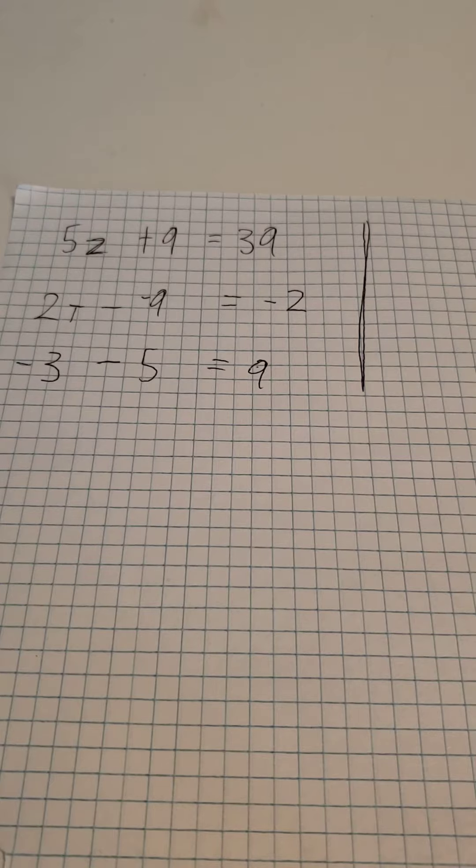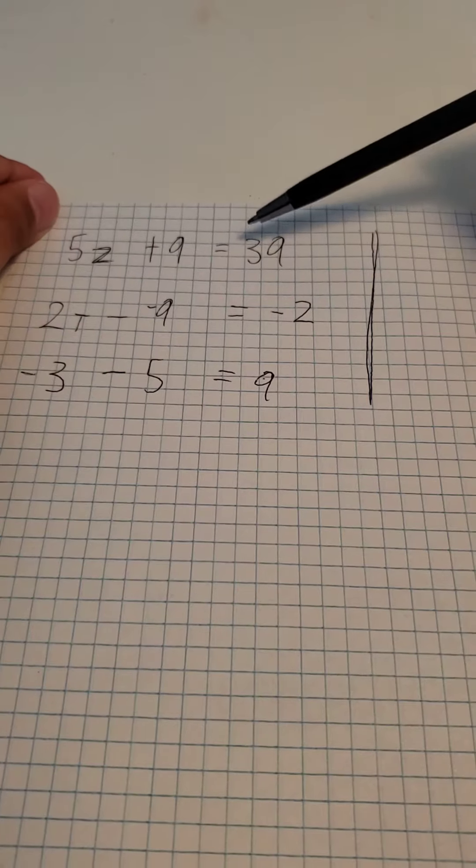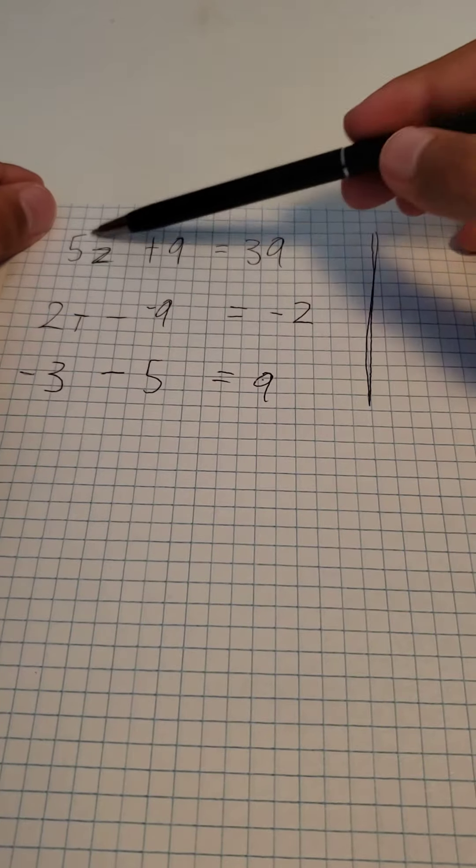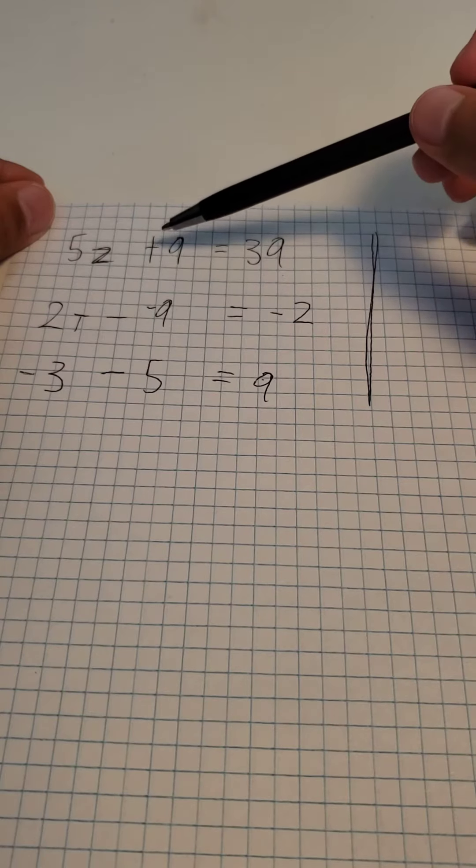An easy way to solve this is by simply subtracting 9. Since this is an equal sign, which means 39 is equal to whatever is over here, you have to subtract 9 on both ends to simplify this equation.